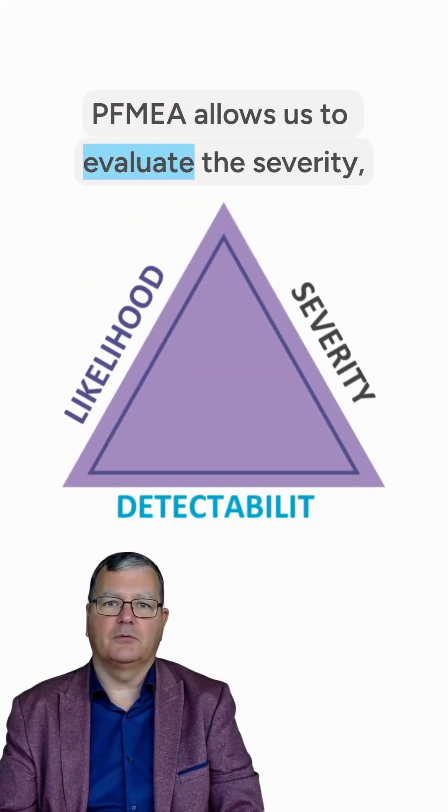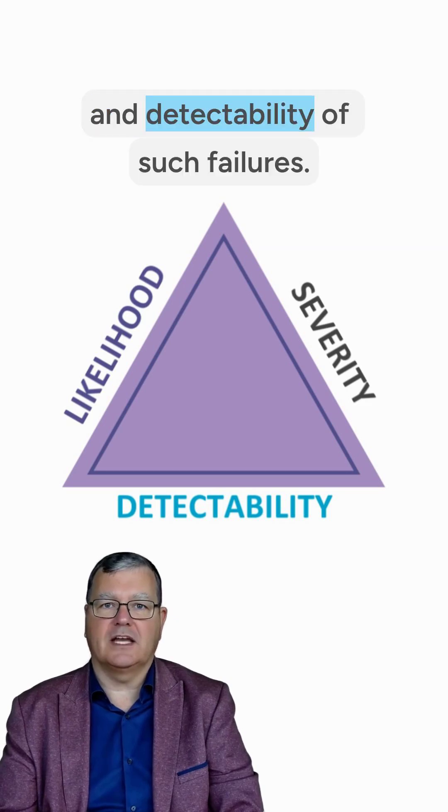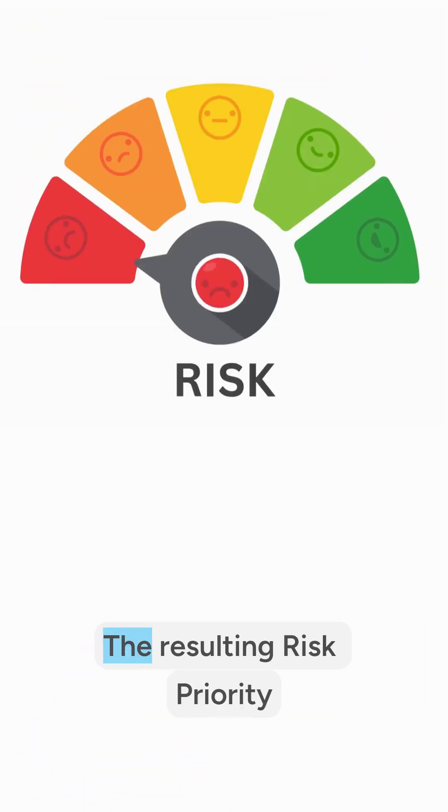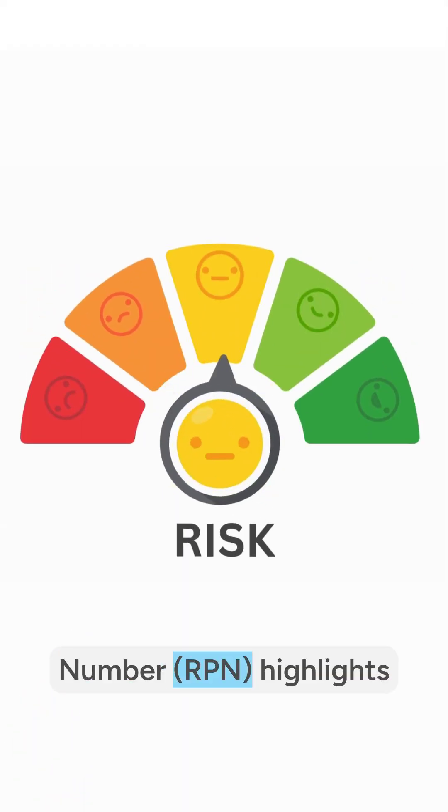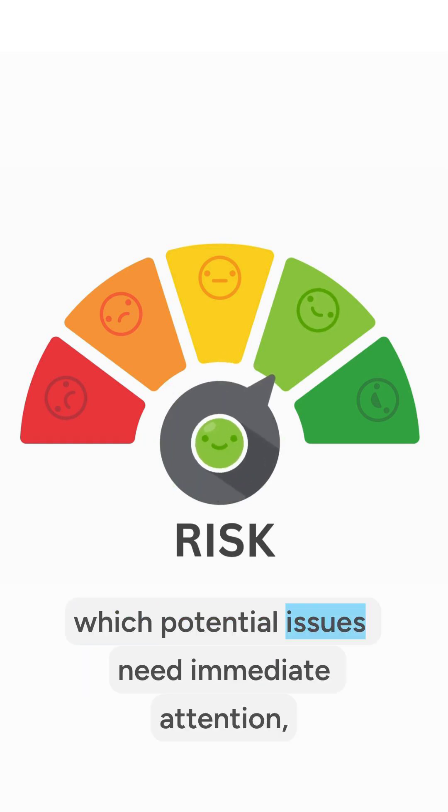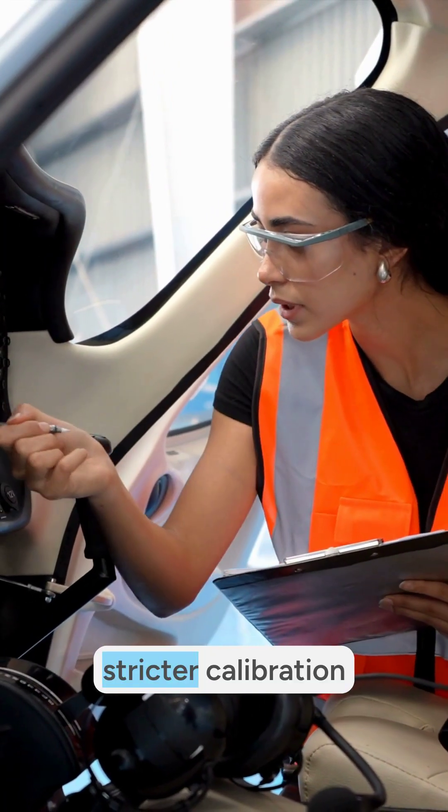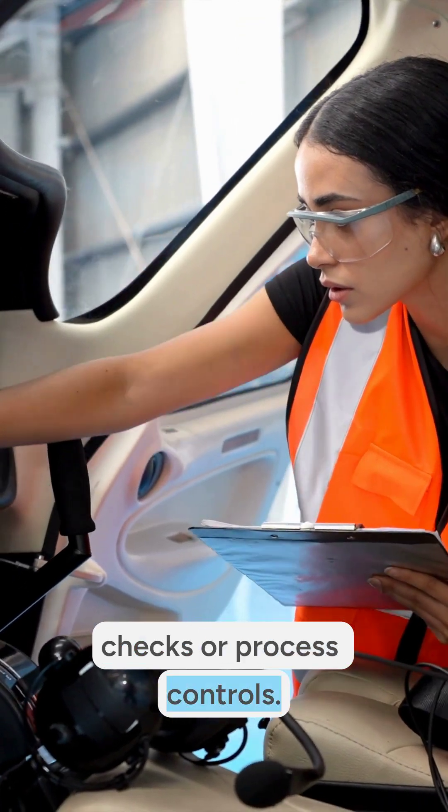PFMEA allows us to evaluate the severity, likelihood, and detectability of such failures. The resulting Risk Priority Number (RPN) highlights which potential issues need immediate attention, such as implementing stricter calibration checks or process controls.